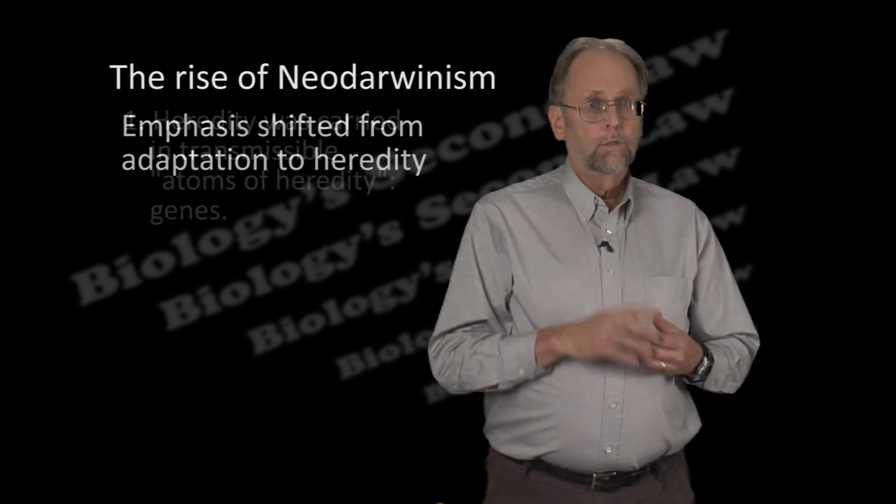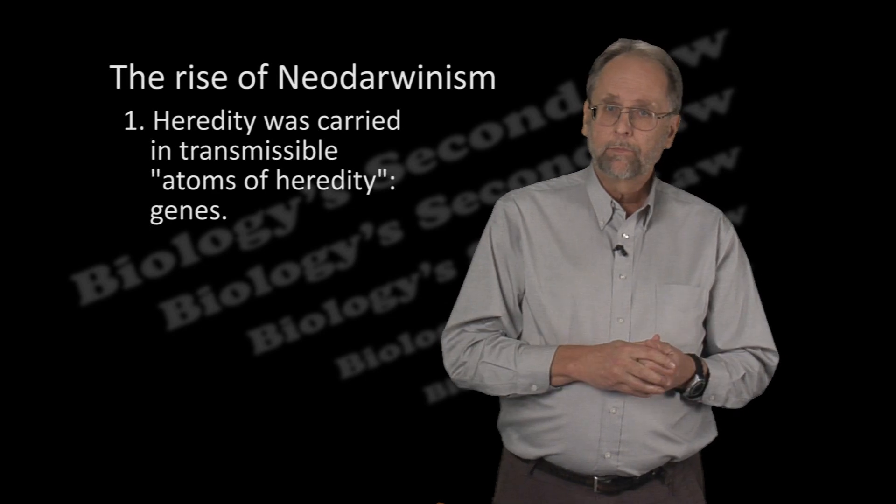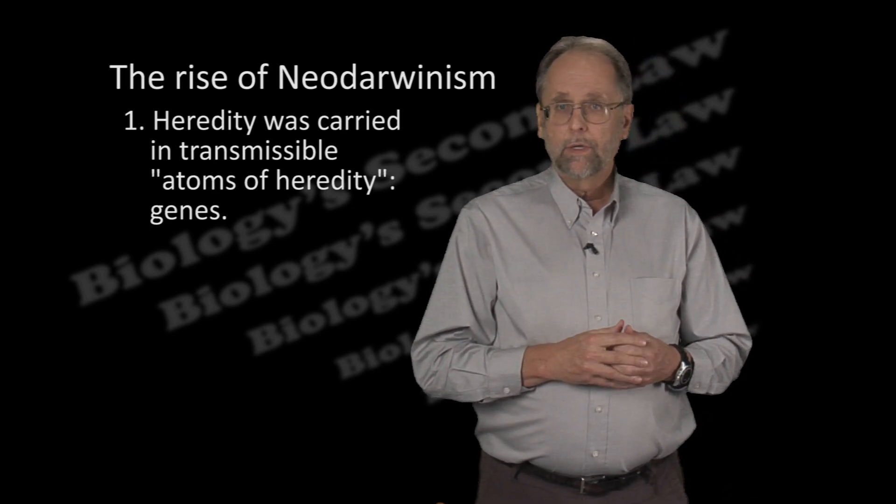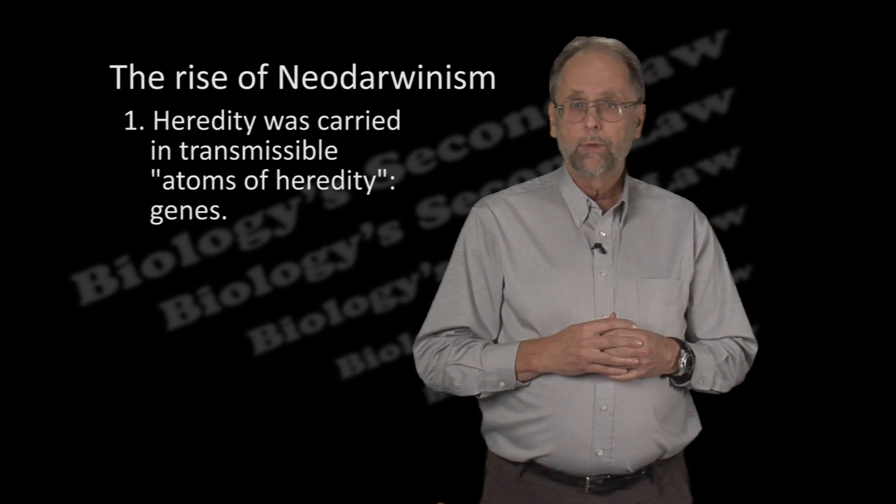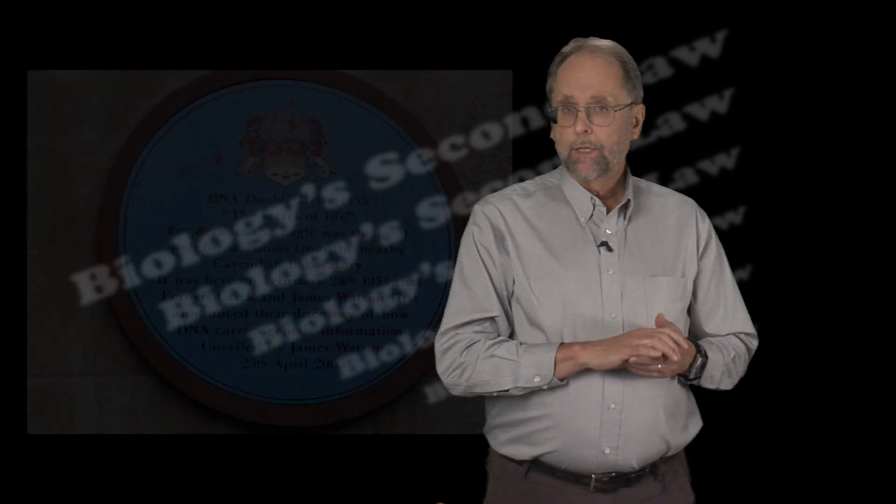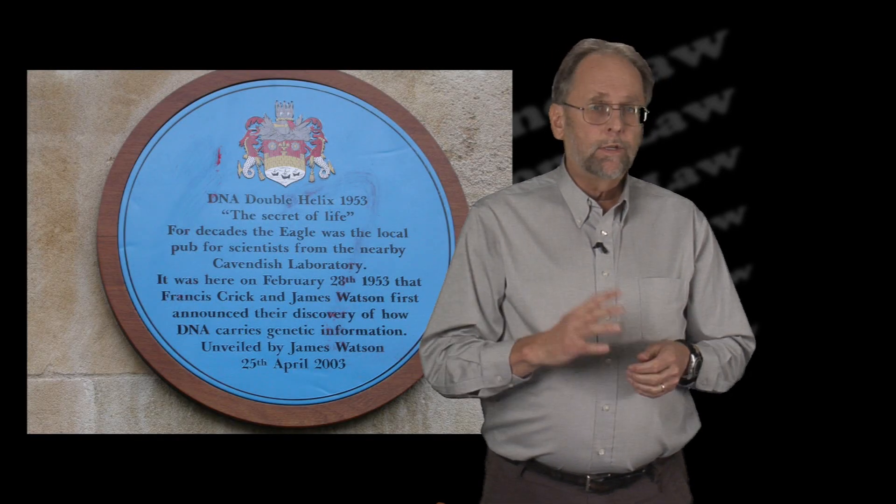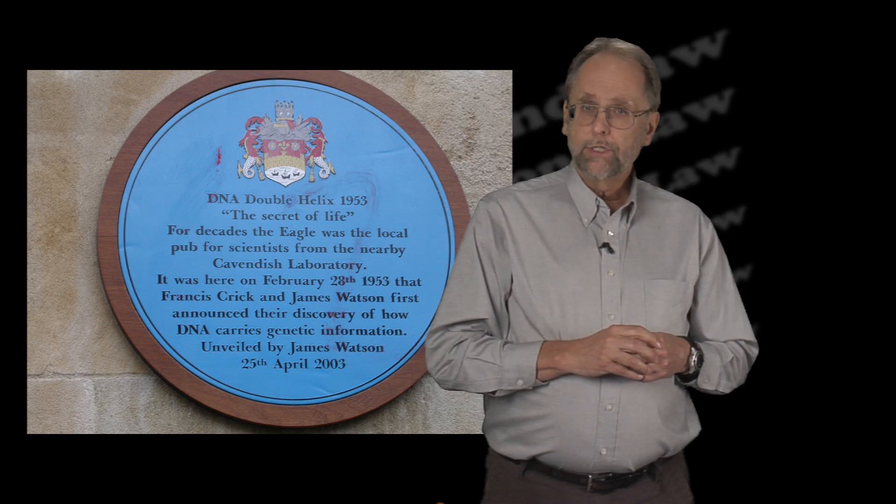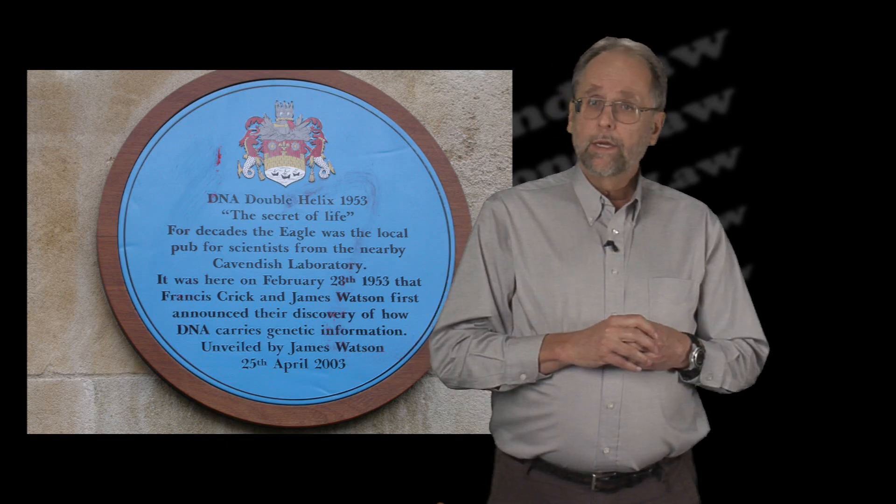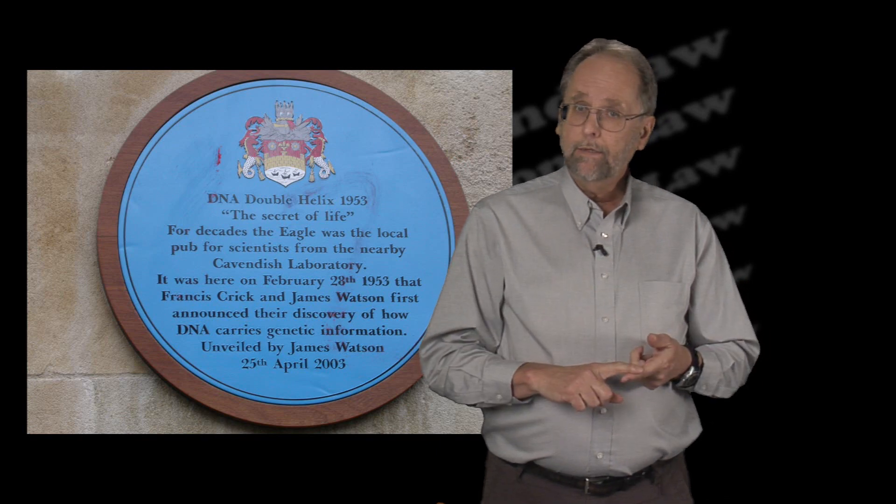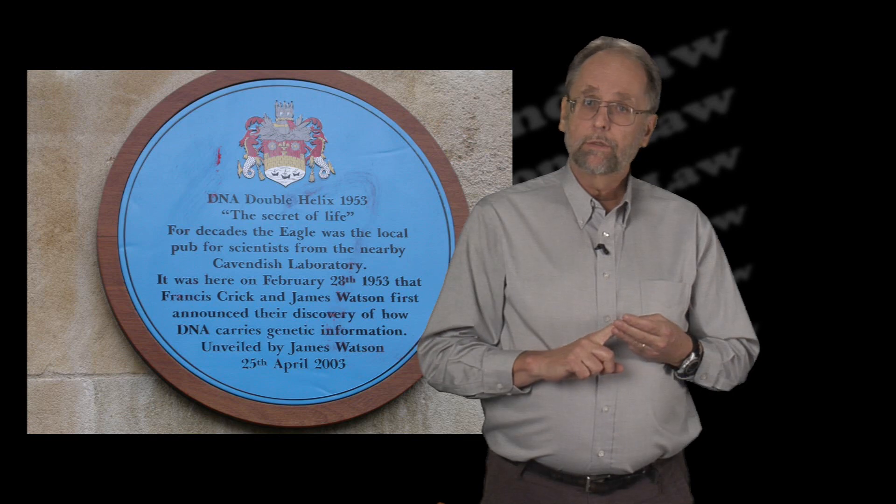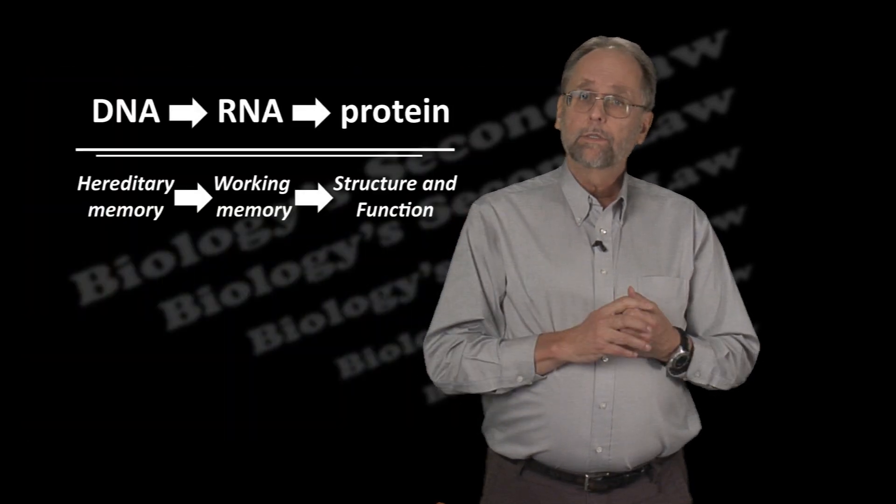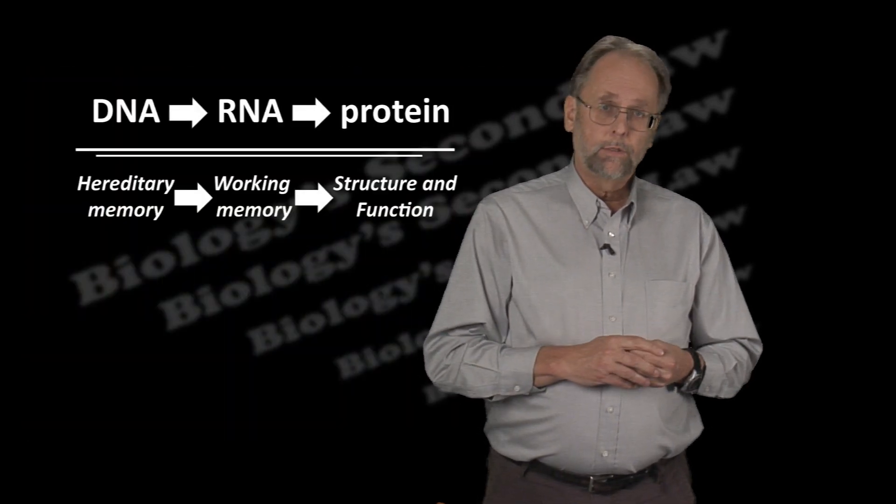The first was the emergence of a credible theory of heredity, in particular the concept of the Mendelian gene as the sole repository of hereditary memory. This set much of biology on the path to uncovering the material nature of the gene, culminating in the 1950s with the discovery of the structure of DNA, its mechanisms of replication, and expression of function. What followed from this was the central dogma of molecular biology.